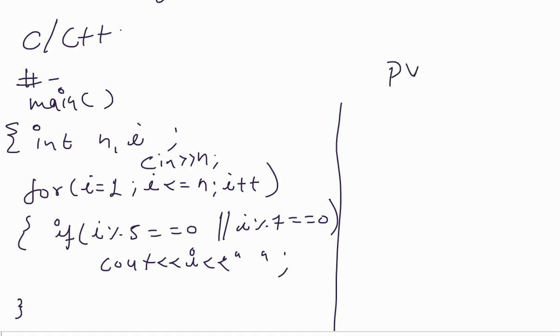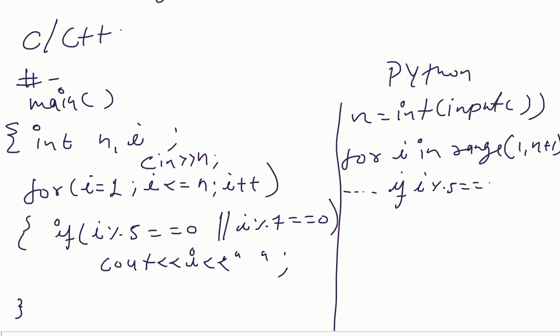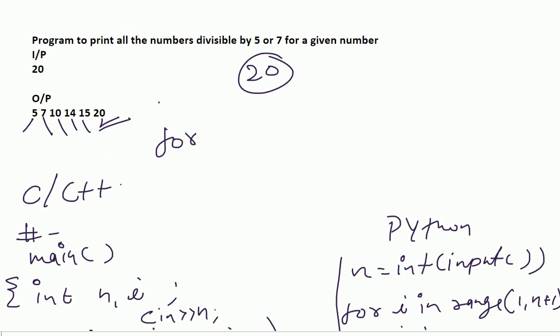Let's discuss this code in Python as well. In Python, we just take a variable n equal to int input. Then for i in range, range 1 to n plus 1, then colon, then space. Then put a condition: if i percent five equal to equal to zero or i percent seven equal to equal to zero.